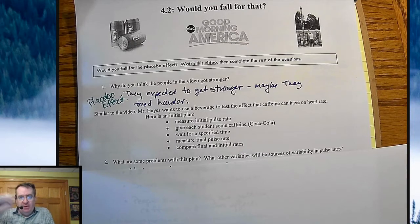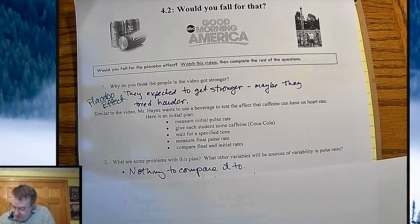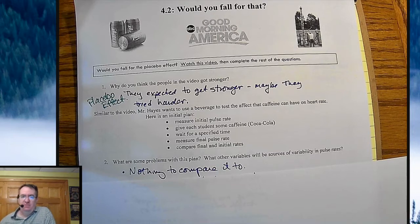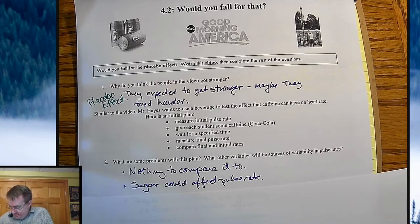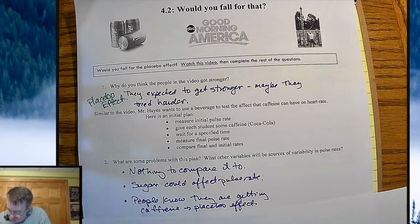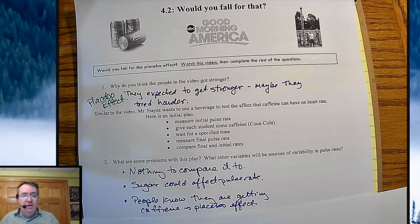Students should write some things down — if you printed out the notes from below, go ahead and do that. Some typical examples: first, you have nothing to compare it to — you're comparing to the initial heart rate, but what about people who didn't get caffeine? Second, the sugar in Coca-Cola could be affecting the pulse rate — how do you know it's the caffeine? Third, people know they're getting caffeine. Since most people know it's a stimulant, their heart rate could increase just from that knowledge — just like our hearts can race from thinking about something scary.